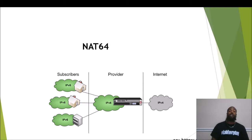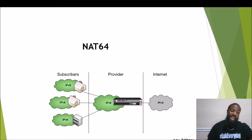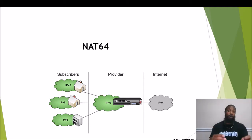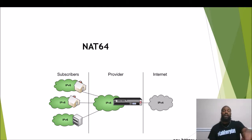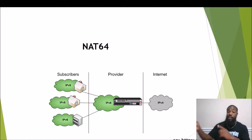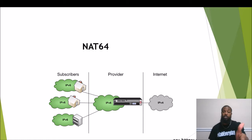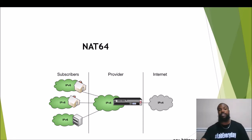With NAT64, you might have subscribers all using IPv6 on the left side. Your provider supports IPv6, but the internet is largely IPv4. Providers can use this technique to NAT IPv6 networks to IPv4, enabling communication across both address families. The slide helps visualize how this bridging works between IPv6 subscribers and the IPv4 internet.